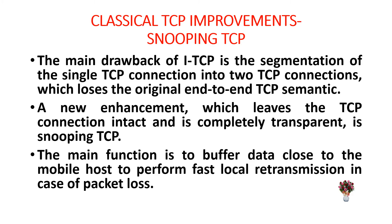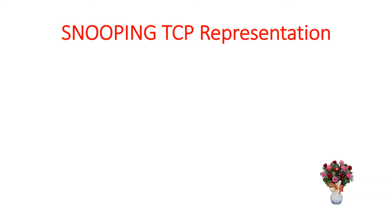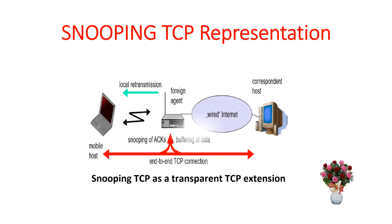The main function is to buffer data close to the mobile host, to perform fast local retransmission in case of packet loss. The snooping TCP representation is shown below. This is the snooping TCP representation, that is the NTN-TCP connection. In further slides, we will discuss in detail about this scenario.